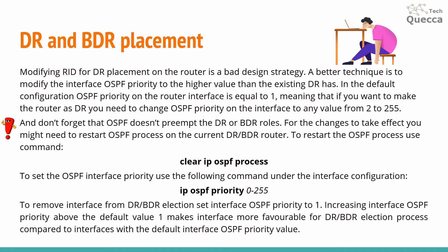Modifying the router ID for DR placement is a bad design strategy. A better technique is to modify the interface OSPF priority to a value higher than the existing DR has. In the default configuration, OSPF priority is equal to 1, so to make a router the DR you need to change the priority to any value from 2 to 255. OSPF does not preempt DR or BDR roles, so for changes to take effect you may need to restart the OSPF process on the current DR or BDR router using the command clear ip ospf process.